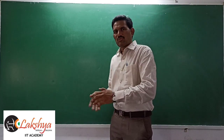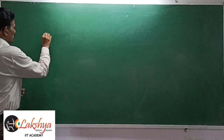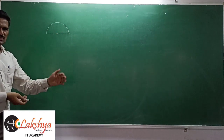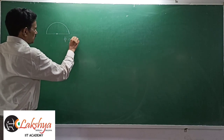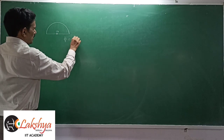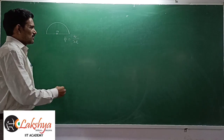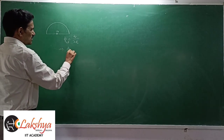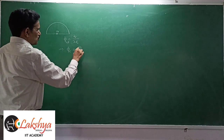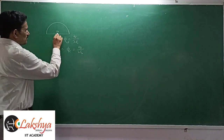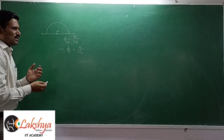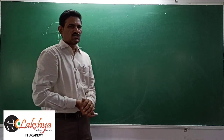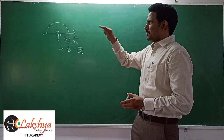We discussed the problem where a charge is placed exactly at the center of a hemispherical surface. The total flux passing through that will be Q by 2ε₀. The flux passing through the curved surface will also be Q by 2ε₀, because the flux passing through the plane surface will be zero — the electric field direction and area vector are perpendicular to each other.